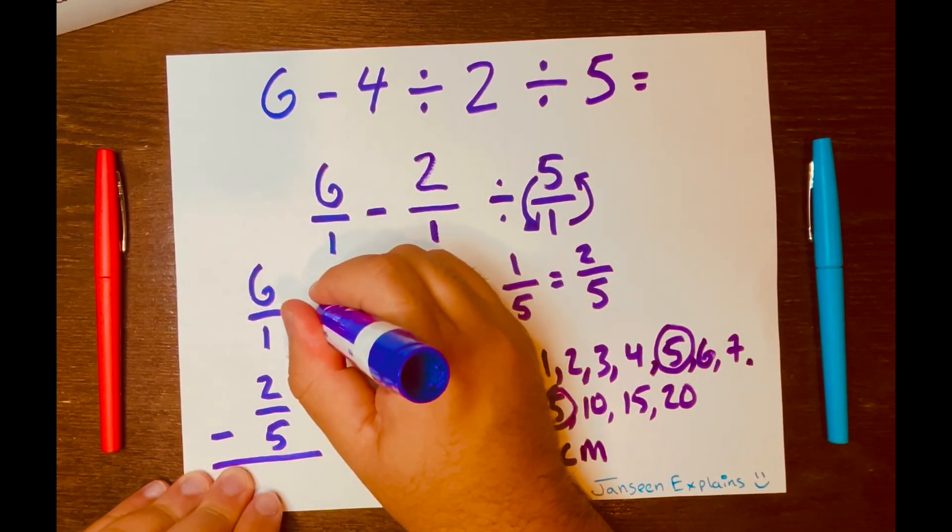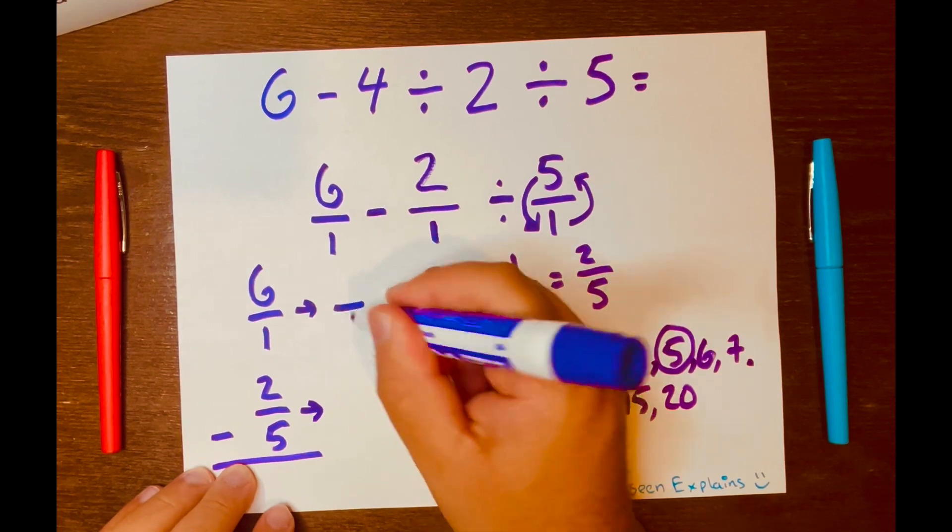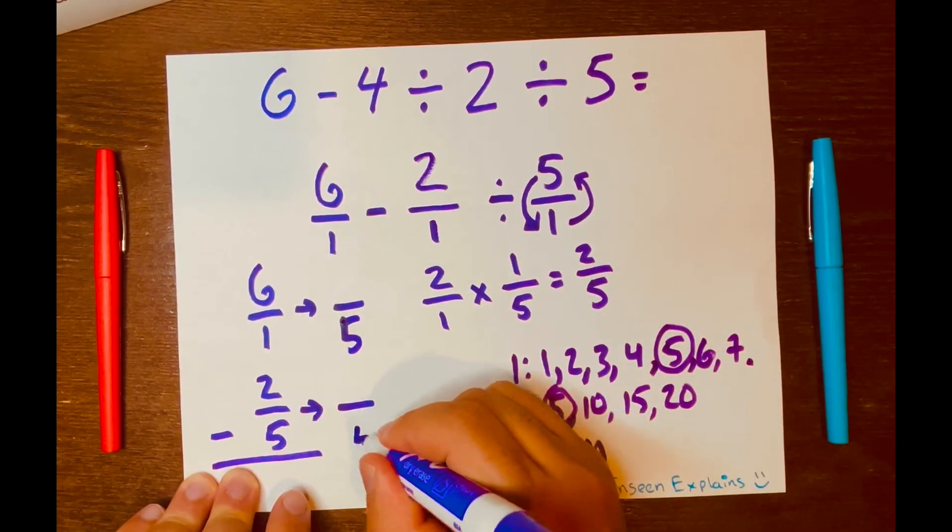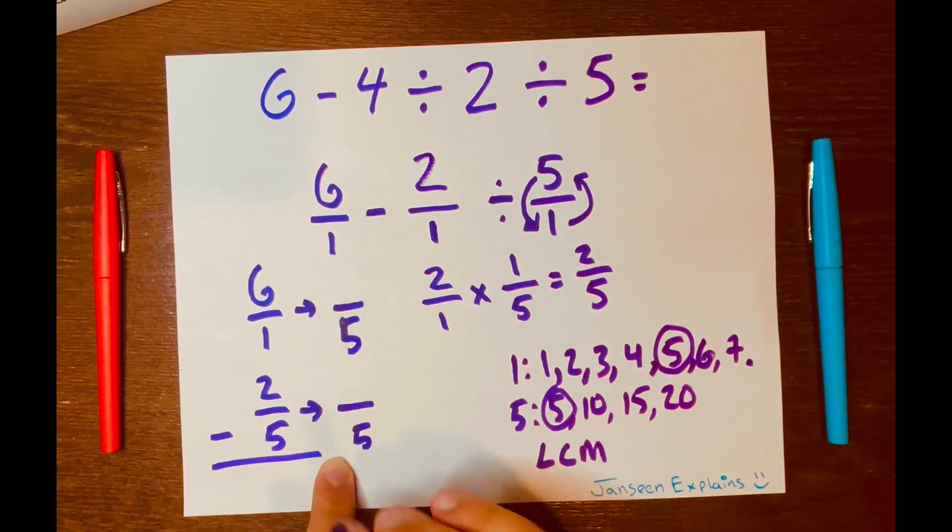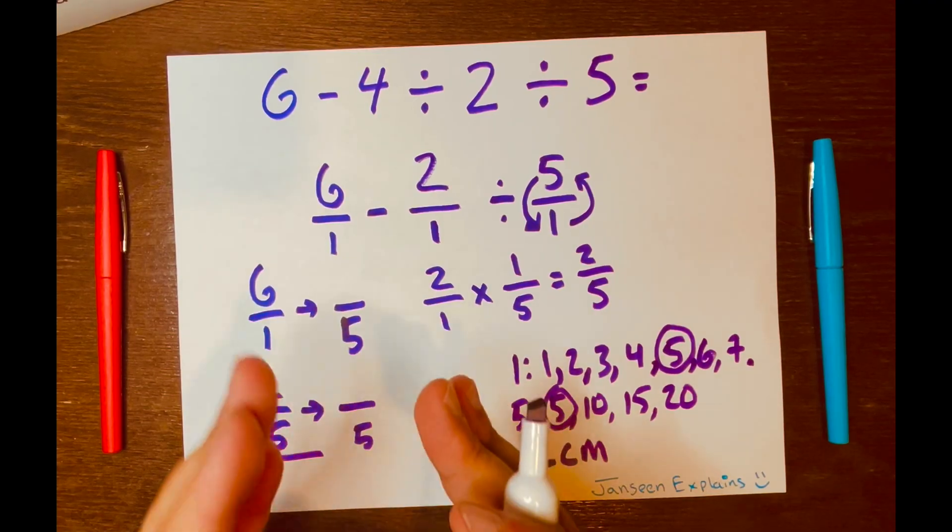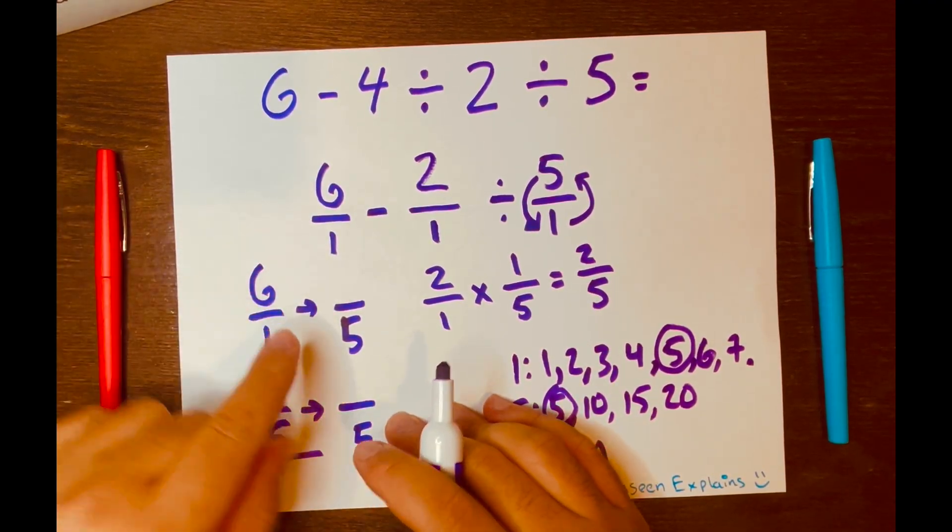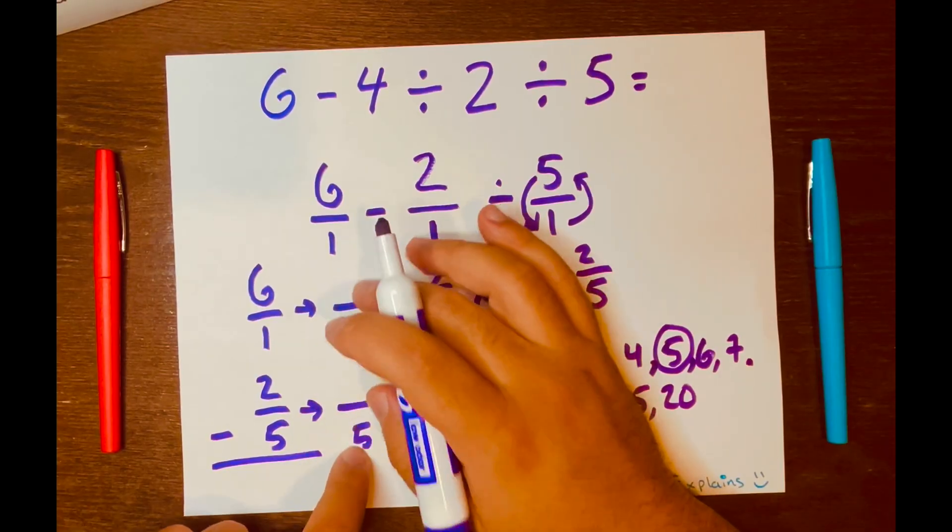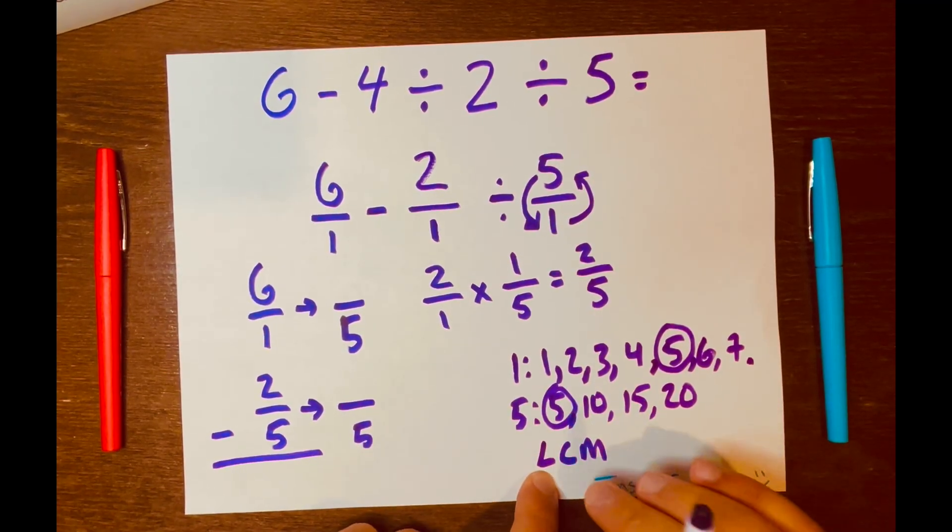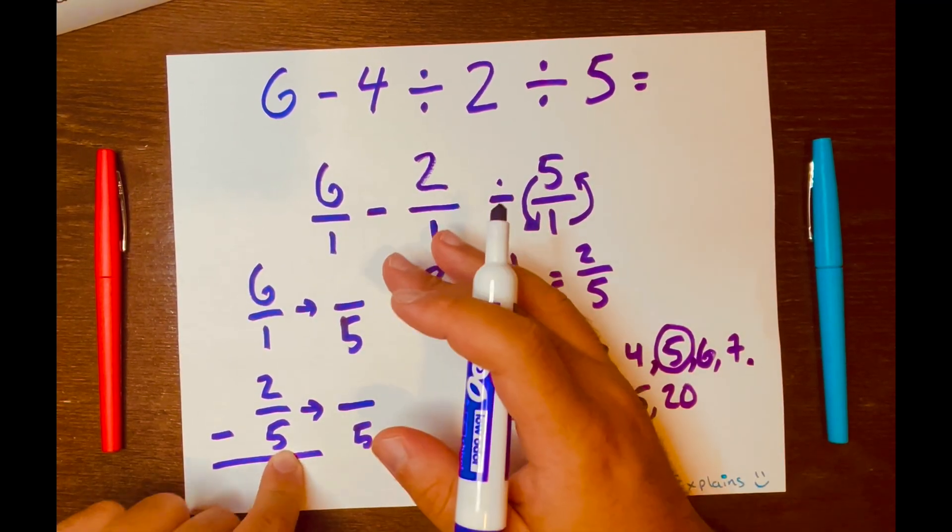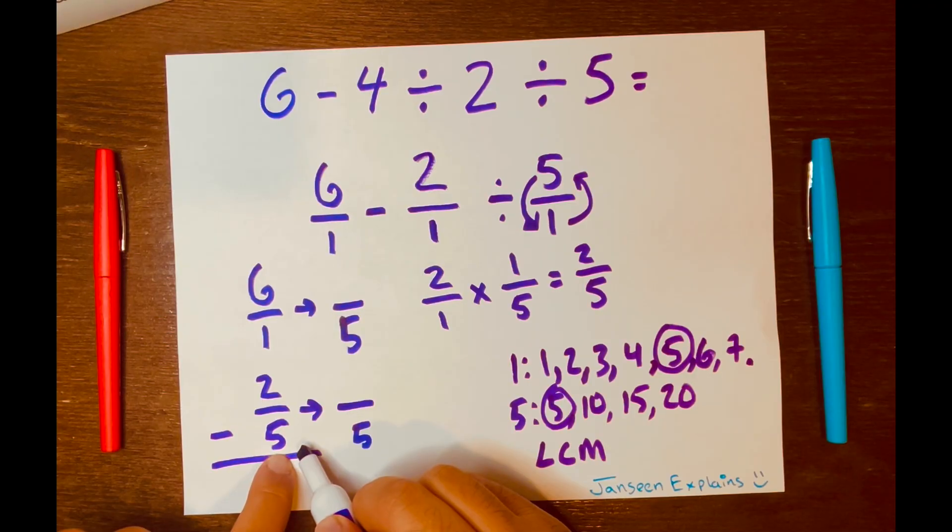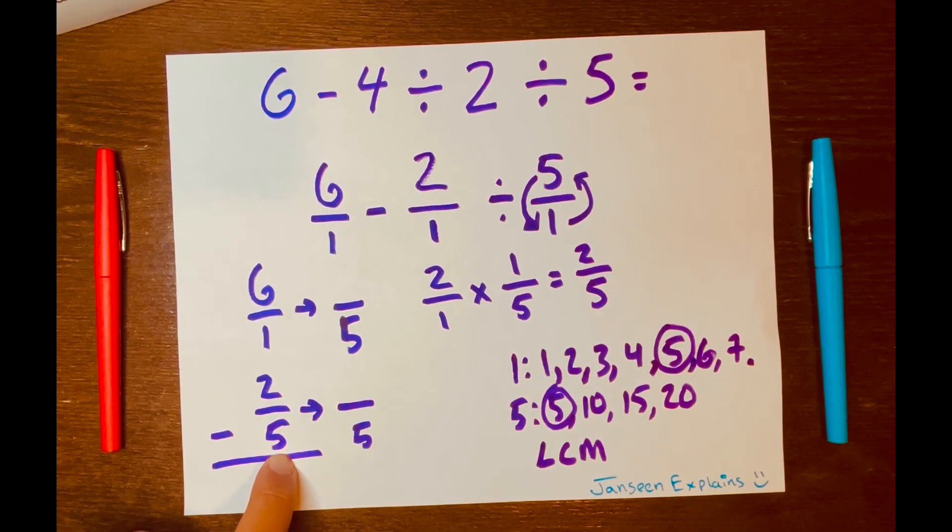And now we can write our equivalent fractions, which makes the denominators the same. So it's 5. So our new denominators will be 5. Now we need to convert the original fractions into equivalent fractions. These are the equivalent fractions with the lowest common multiple.